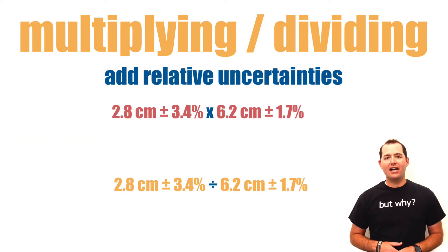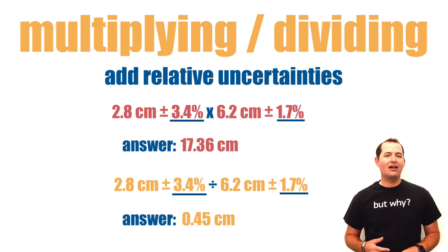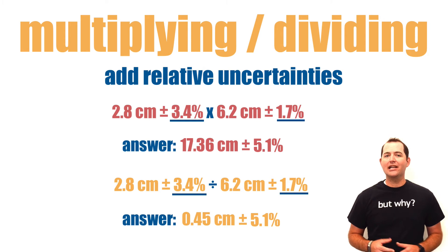To multiply or divide values with uncertainties, we will first complete the proper math function on our measured values. Then we will add our relative uncertainties together. It doesn't matter if we are multiplying or dividing our values, we will still add our relative uncertainties.